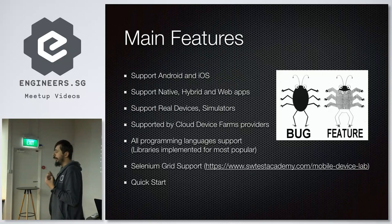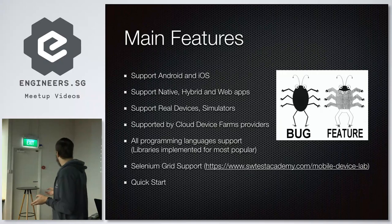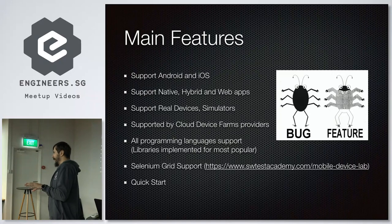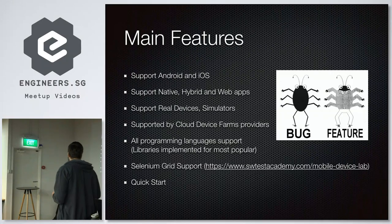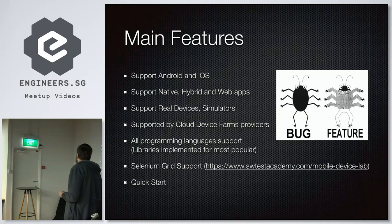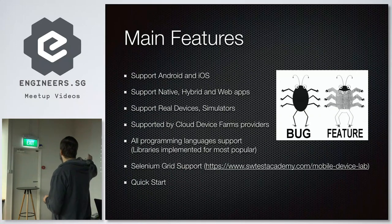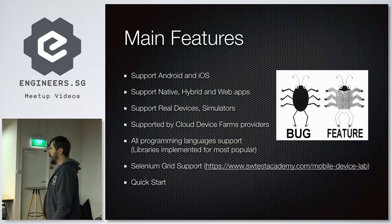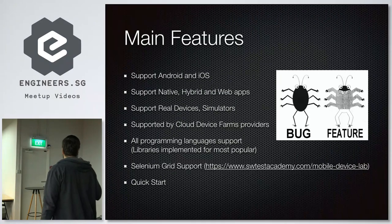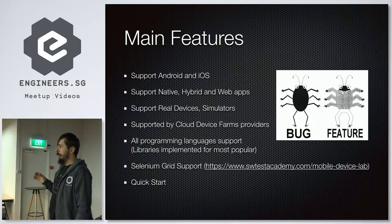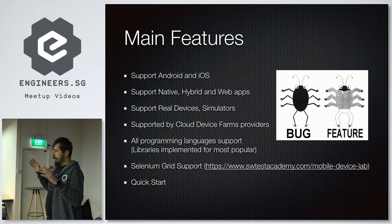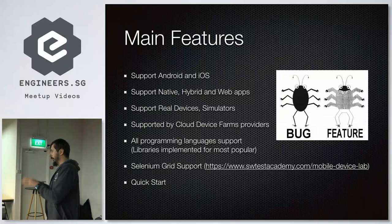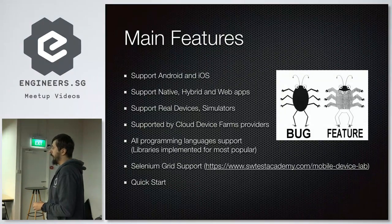Appium uses the same protocol as Selenium. So if you're using an unpopular language for test automation, you can still use Appium. Because it follows the same protocol as Selenium, you can also use Selenium Grid — the tool to parallelize your tests, running them not one by one but in parallel. Selenium Grid is one of the tools you can use for that.